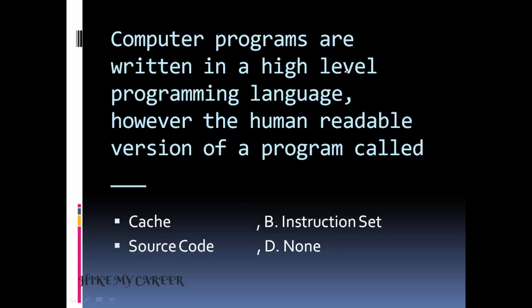Next question. Computer programs are written in a high-level programming language. However, the human-readable version of a program is called? Option 1: Cache. Option 2: Instruction Set. Option 3: Source Code. Option D: None. Answer is Source Code.